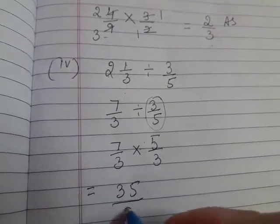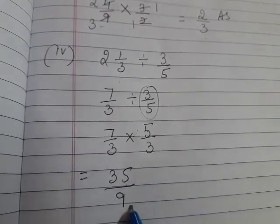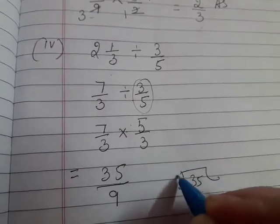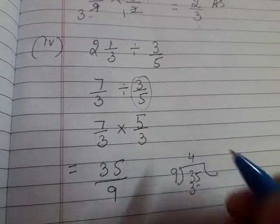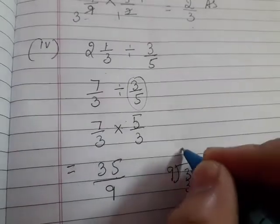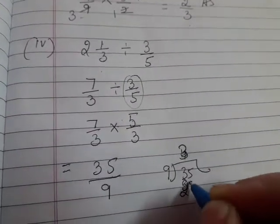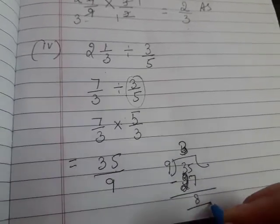This is an improper fraction - numerator is greater than denominator. Then we convert into mixed fraction. Nine fours are thirty-six, this is greater than thirty-five. So nine threes are twenty-seven, then thirty-five minus twenty-seven, that is eight.